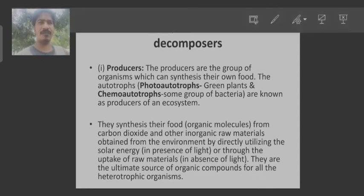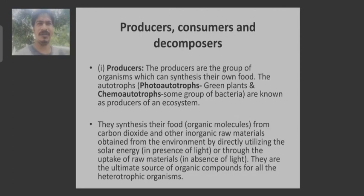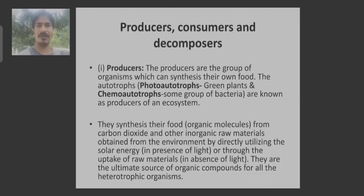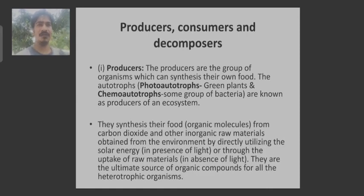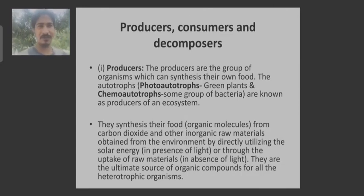How do they prepare their own food? A typical example is photosynthesis. In photosynthesis, sunlight is utilized, chlorophyll helps in trapping the sunlight, and by the utilization of inorganic raw materials such as carbon dioxide and water, glucose is prepared. Oxygen is liberated as a by-product. This is the simple mechanism of photosynthesis through which green plants prepare their food.